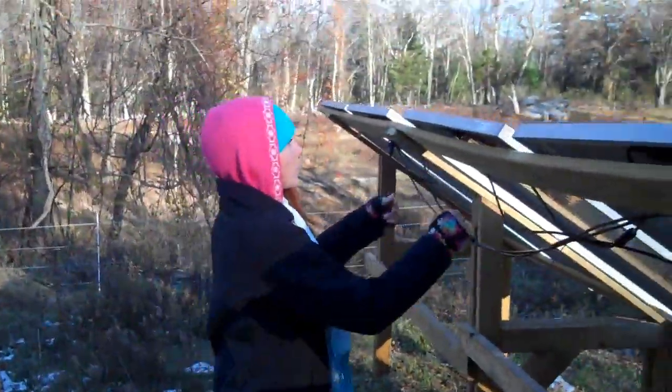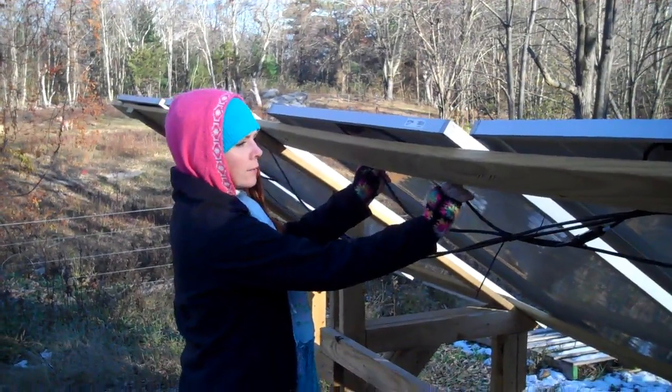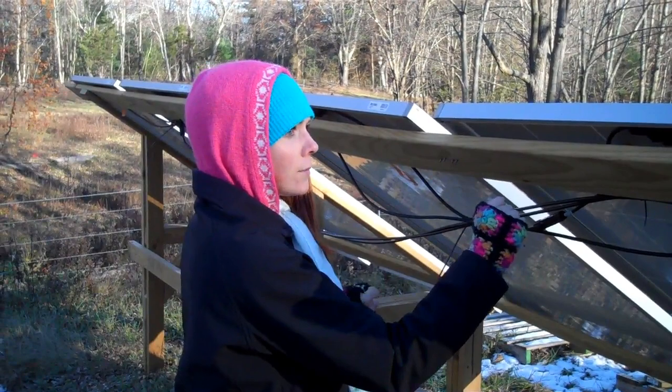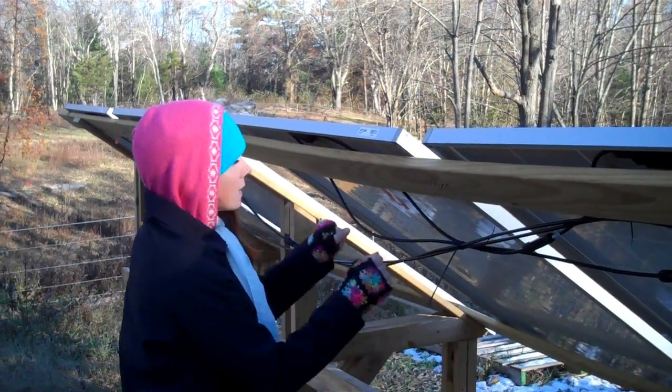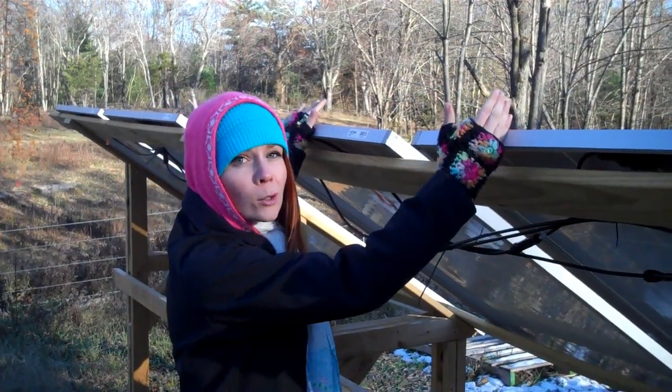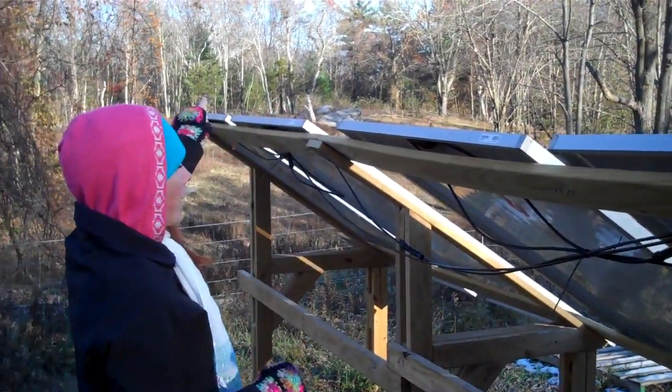All of your solar panels are going to come with a positive and a negative lead on them. And what I mean by series is simply taking the positive lead from one panel and connecting it to the negative lead of the next panel. So now they function as one unit. They are in series. So we have 4 pairs.